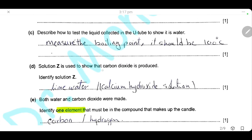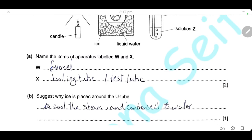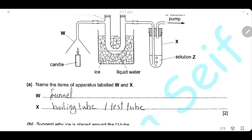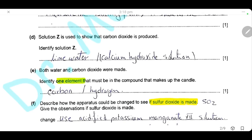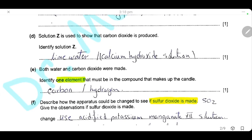Solution Z is used to show that carbon dioxide gas is produced. Identify solution Z. Solution Z is lime water, or calcium hydroxide solution, which turns milky or cloudy when carbon dioxide gas passes through, due to the formation of insoluble calcium carbonate. This is the test for carbon dioxide gas, and solution Z is lime water.